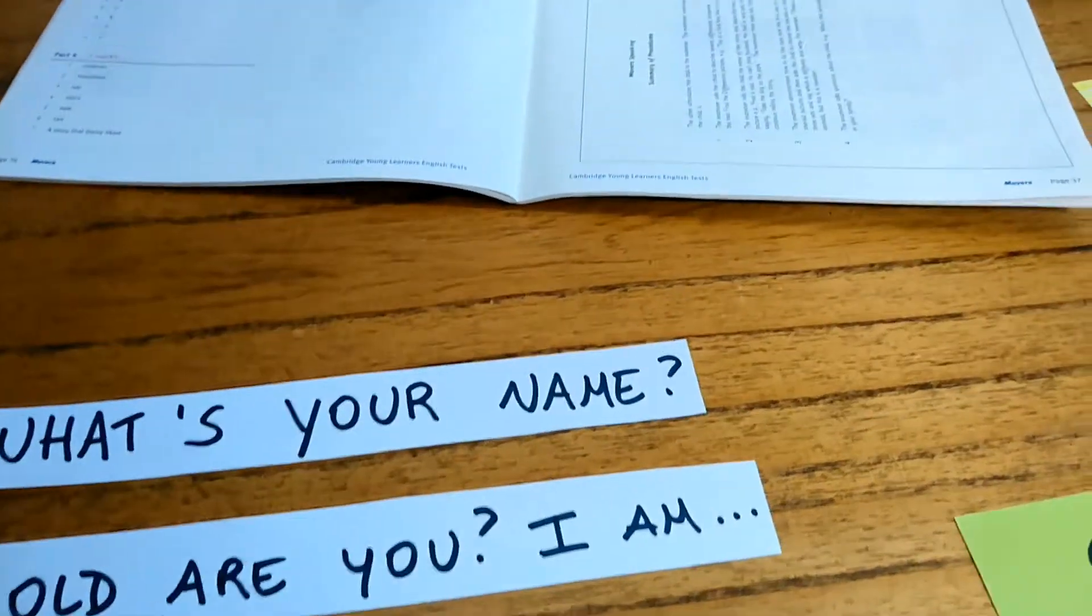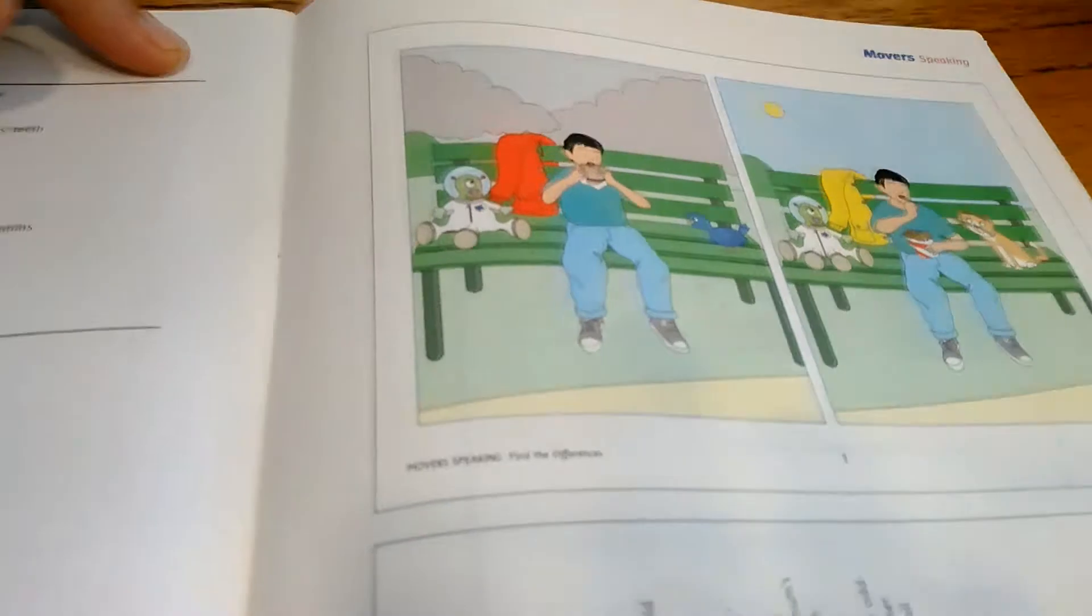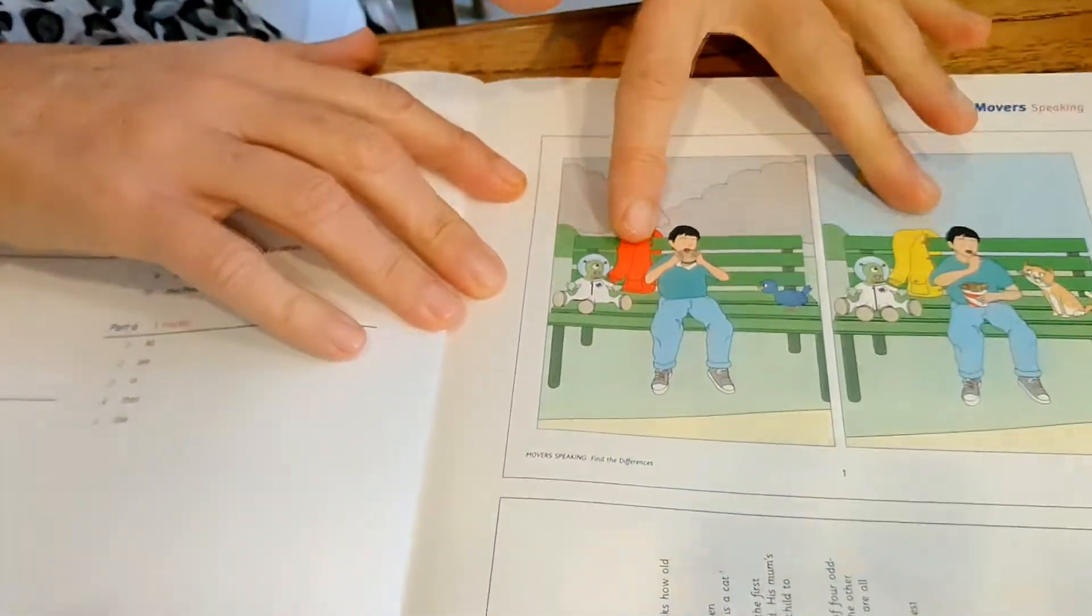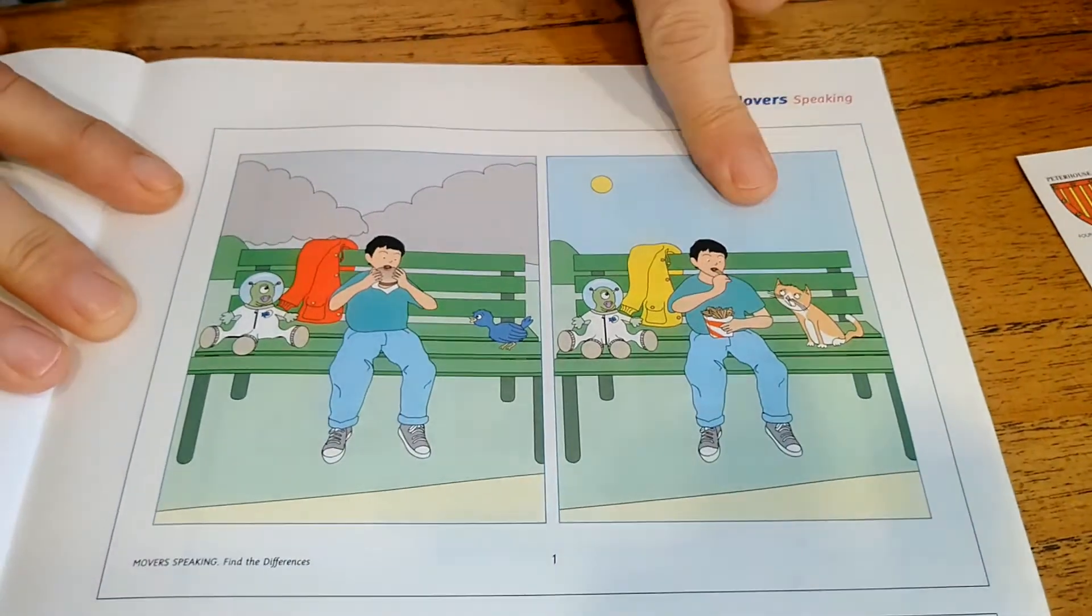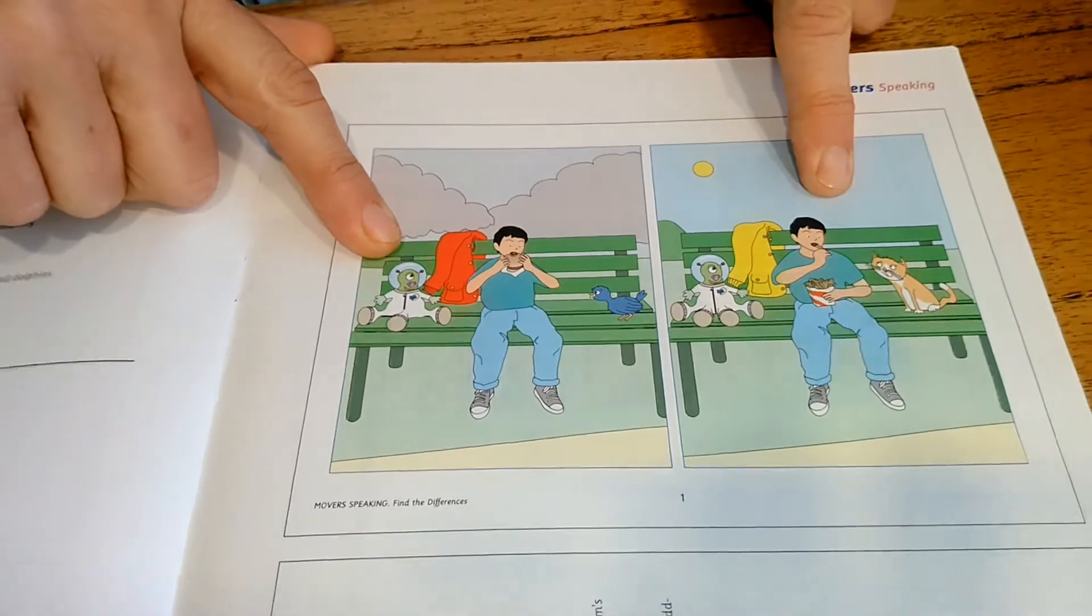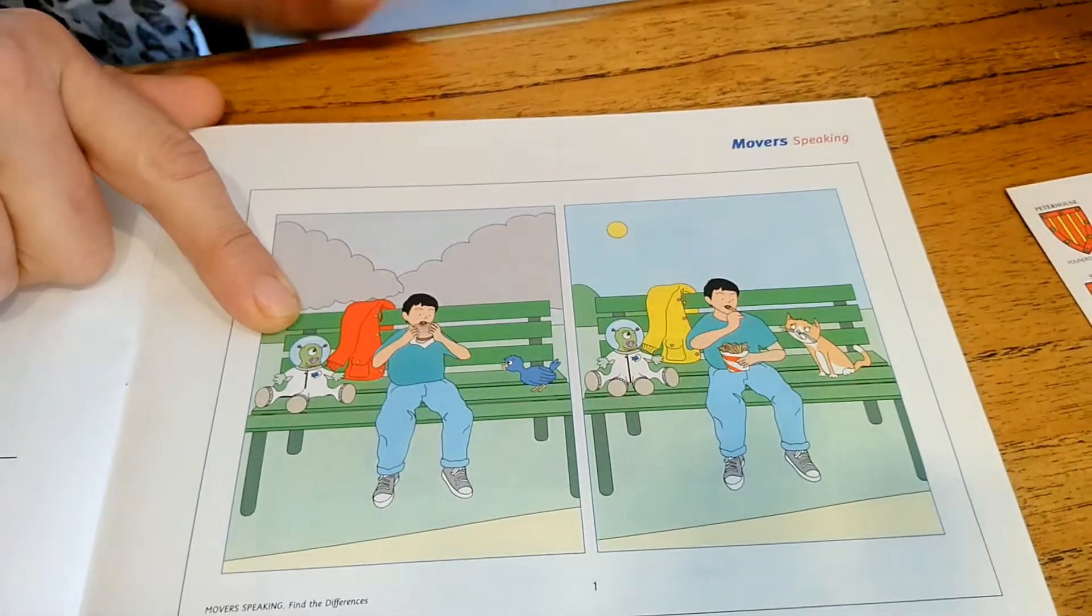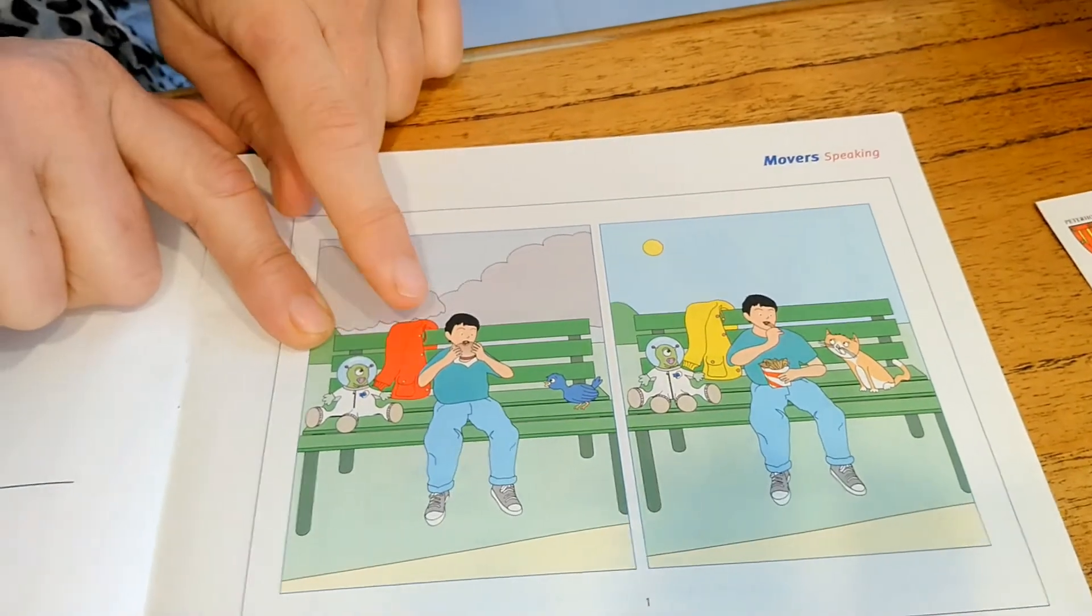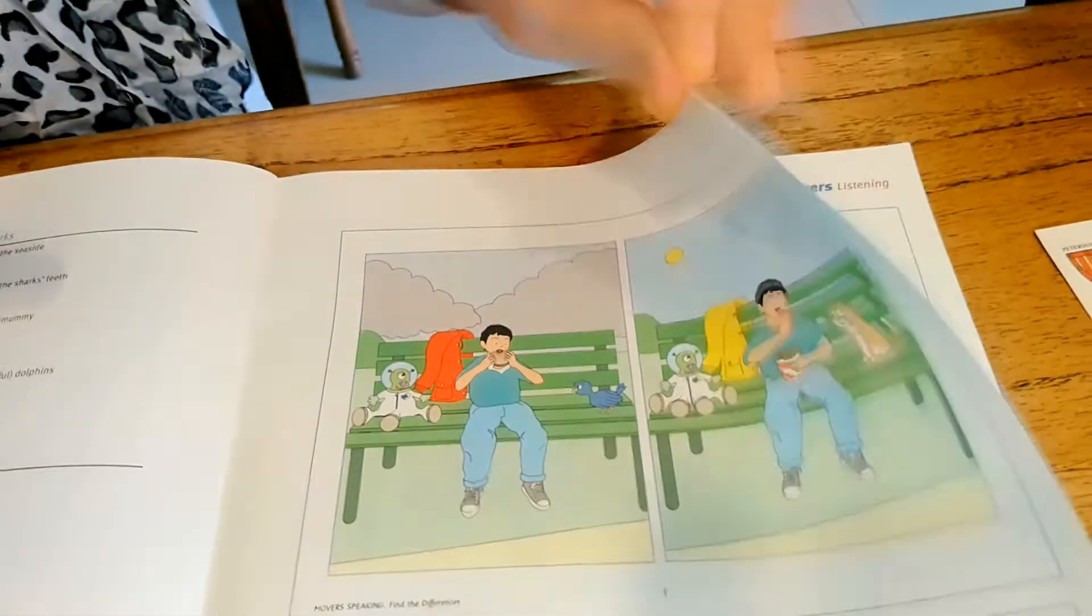And in this part of the paper, you have two similar pictures, but they are not exactly the same. You have differences. So the examiner is going to say, suppose this is the examiner's picture and this is your picture. The examiner is going to say, in my picture, there is a yellow jacket. And you have to say, in my picture, the jacket is red. You need to find the differences.